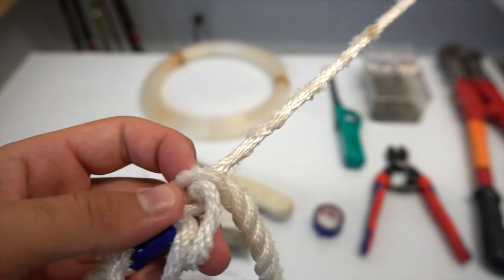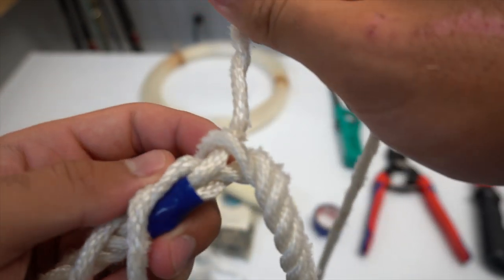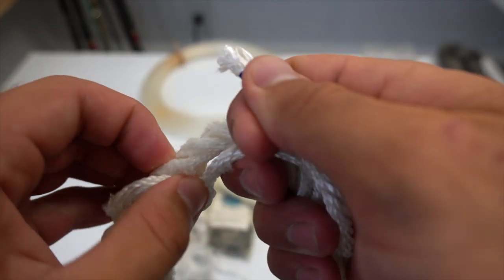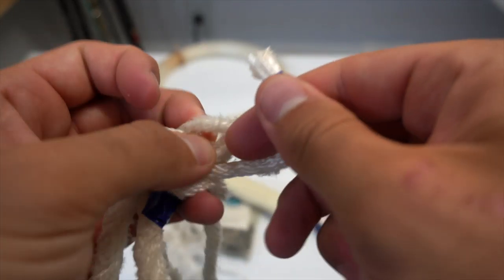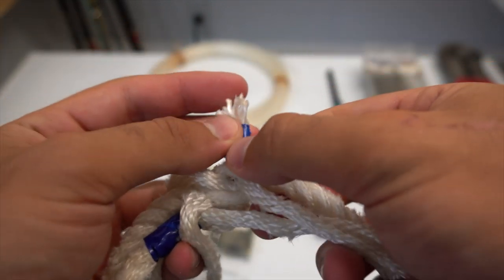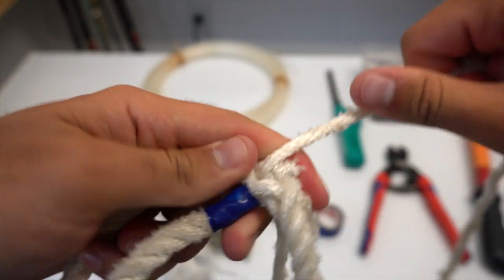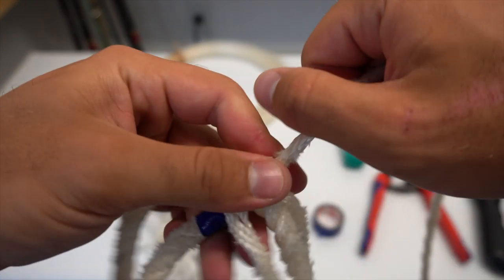Again, you want to pull it all the way tight. Same thing with the final strand. You want to move up one more strand on the rope and then make that gap and braid it under and pull it tight. Once you have each one of your strands braided, you want to make sure to pull each one of the loose ends as tight as you can get it.